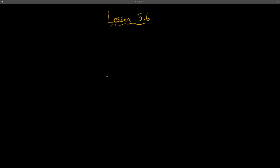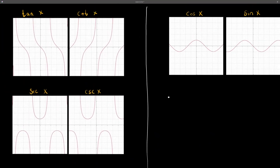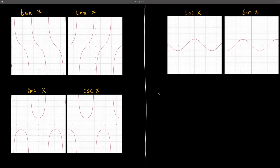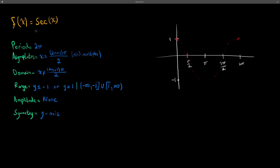Lesson 5.6: The Graphs of Other Trigonometric Functions. This lesson focuses on the other four trigonometric functions not covered in lesson 5.5: tangent, cotangent, secant, and cosecant. These four functions have their own graphs and characteristics. Unlike sine and cosine which have wave-like graphs, in this lesson the graphs will have vertical asymptotes, meaning the y-values stretch to infinity and are undefined.